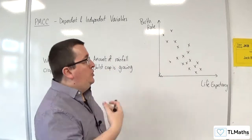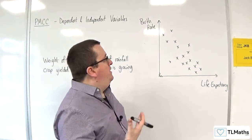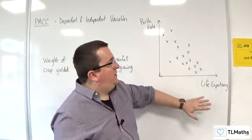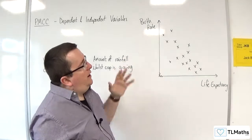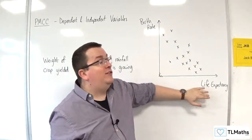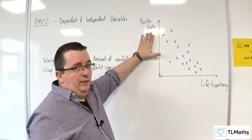In the previous video, I introduced this scatter graph that I've drawn which shows a number of countries. I've plotted their life expectancy against their birth rate. I chose the life expectancy to be the horizontal axis and birth rate to be the vertical axis.